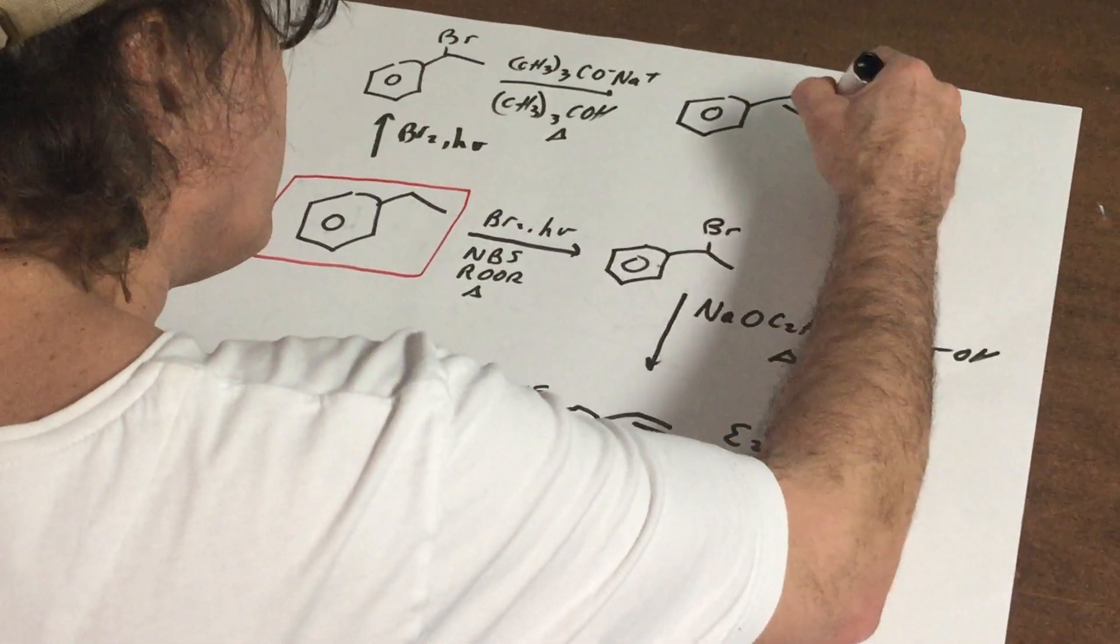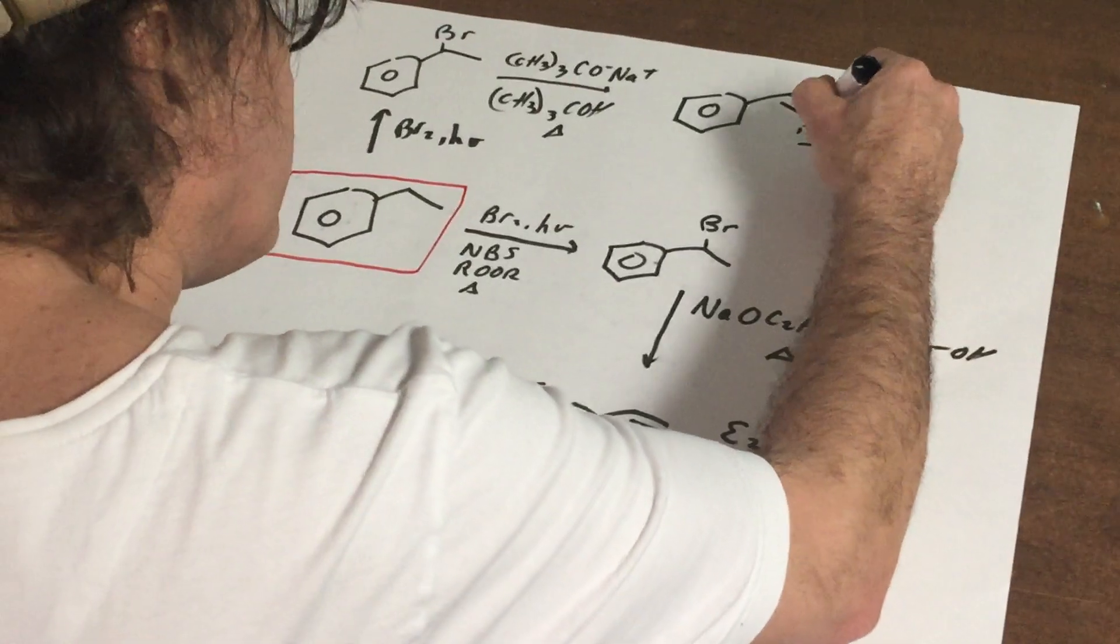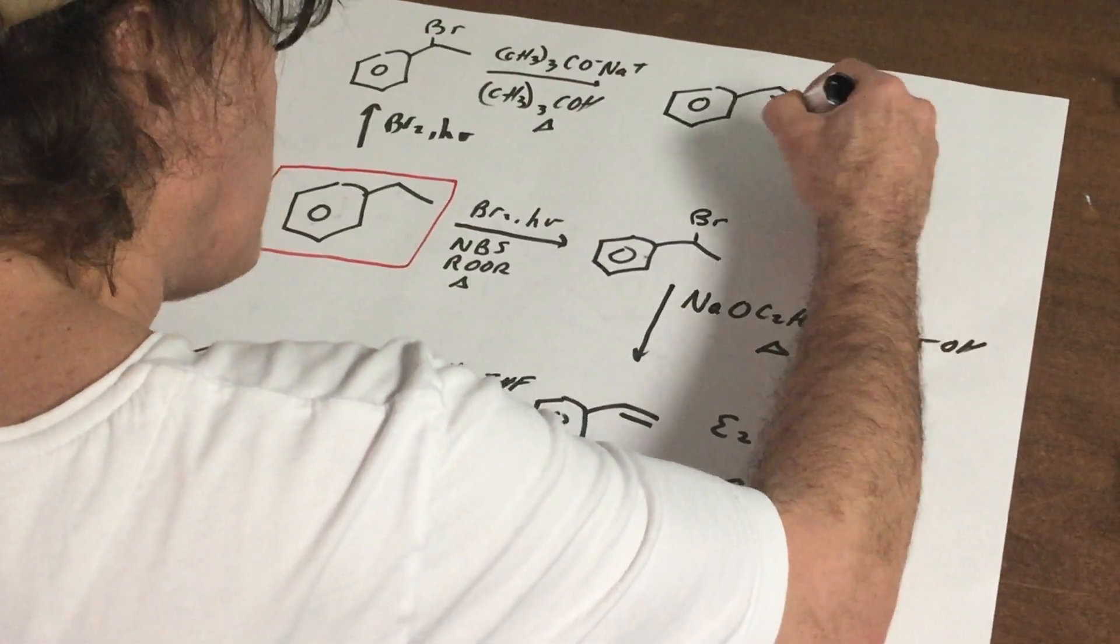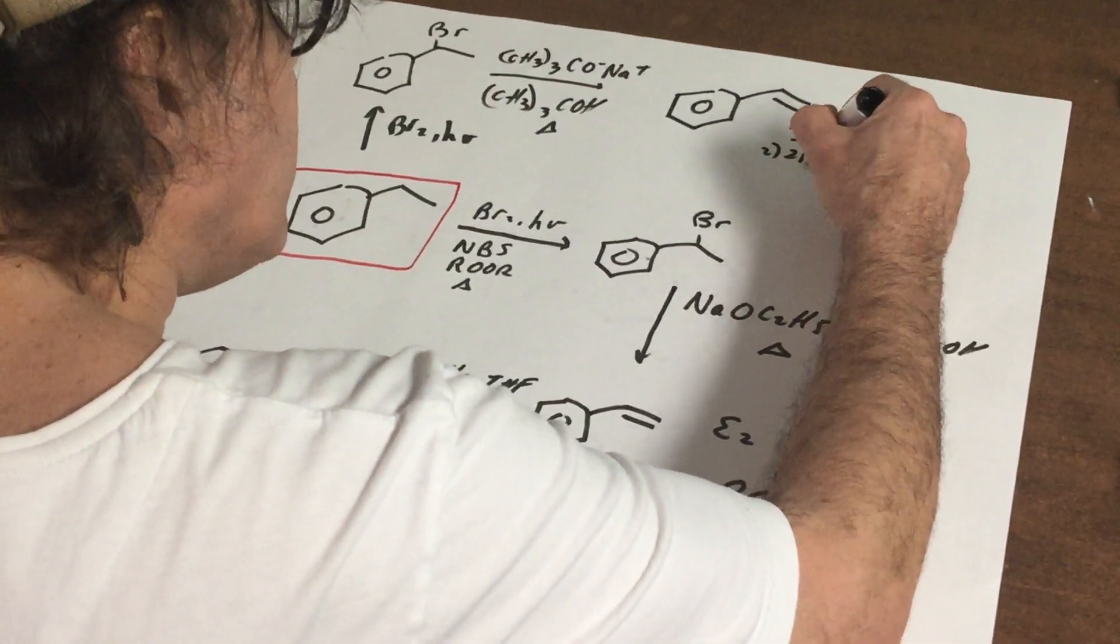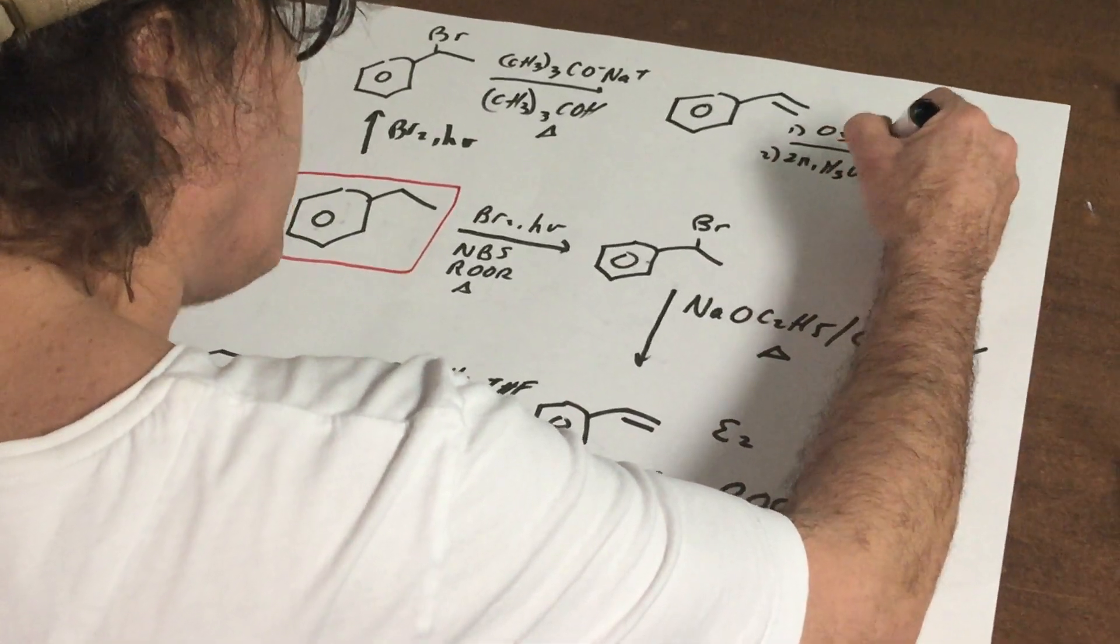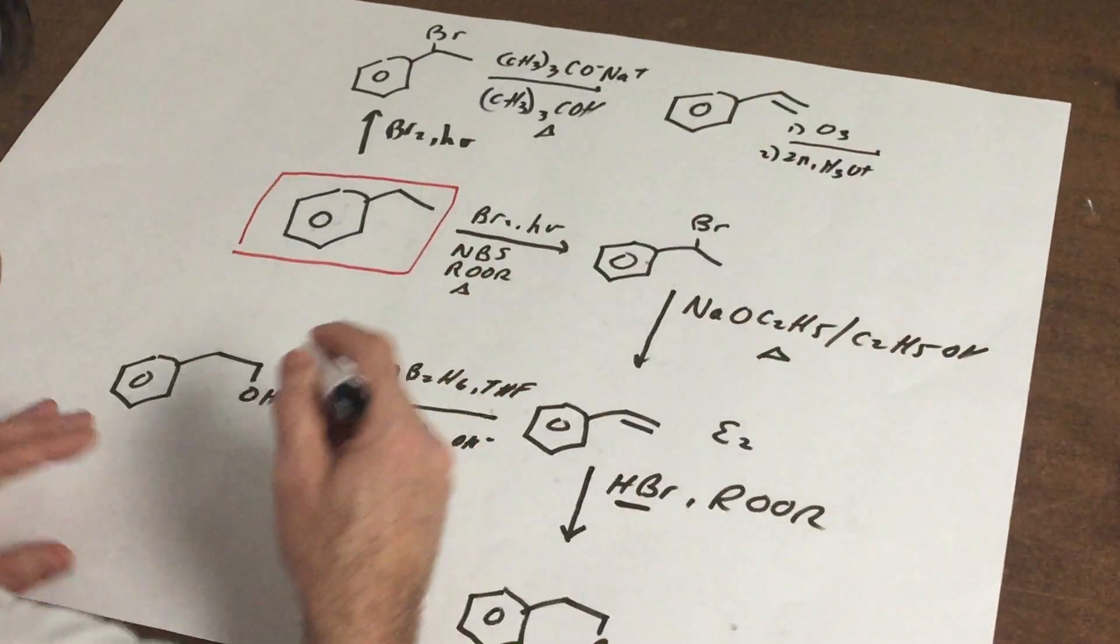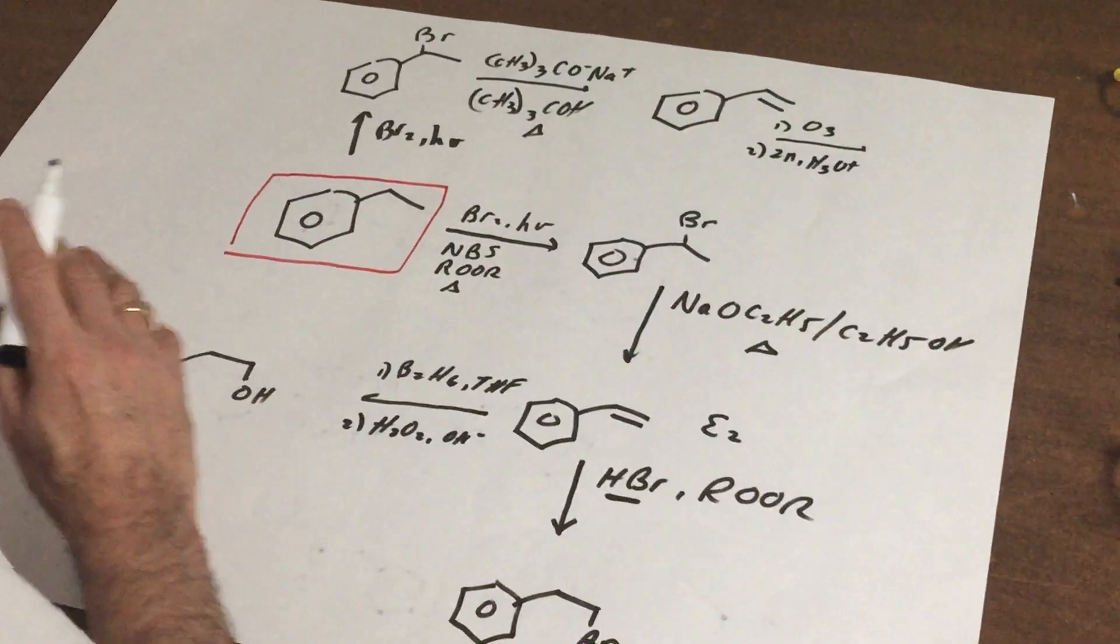And then to here, why don't we do an ozonolysis? Ozone, and then we'll use zinc and acid. What ozone's going to do, normally ozone won't touch the benzene ring. So if it doesn't touch the benzene ring,